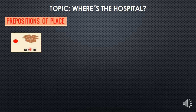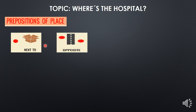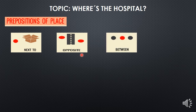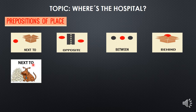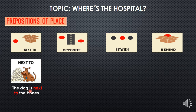Tenemos next to, que significa cerca de. Opposite, que significa opuesto. Between, que significa entre o en medio de. Tenemos también behind, que significa detrás. Para ello tenemos algunos ejemplos. Para next to, tenemos la siguiente imagen. ¿Qué oración podemos decir de esta imagen? Tenemos: That dog is next to the bones. El perro está cerca de los huesos. Very good.